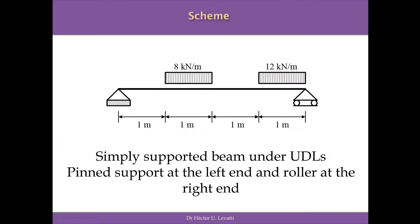The simple supported beam spans 4 meters and is under two UDLs: one is 8 kN per meter and the second is 12 kN per meter, located as shown in the scheme. To the left side of the structure we have a pin support, and to the right end we have a roller.